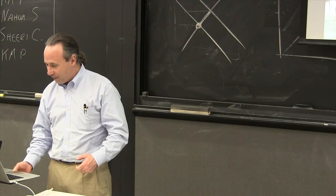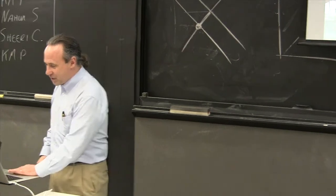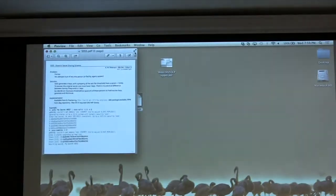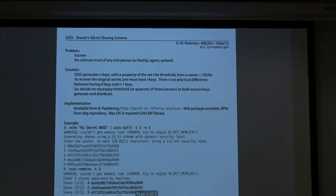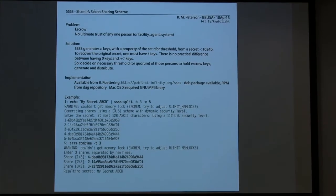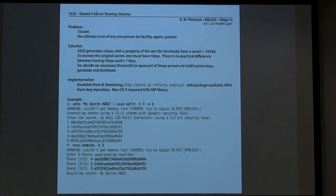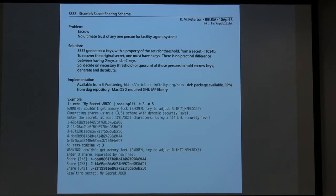And I found something called Shamir's Secret Sharing Scheme, which is a really interesting algorithm. There's an implementation of it, and here's how it works. Basically, you give it a secret, which is a string, and you say, please make five keys, for example. Make a certain number of keys.